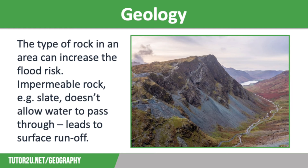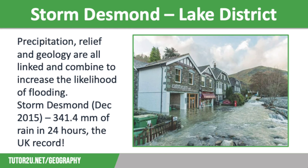In contrast, low-lying areas are often covered in impermeable clays. While there is vegetation to intercept rainfall, infiltration doesn't really occur as clay soils are very compacted, so water cannot get through. Areas with permeable rocks such as limestone and chalk have a much lower risk of flooding, as water can pass through these rocks, which decreases surface runoff. Precipitation, relief, and geology are all linked and combined to increase the likelihood of flooding. For example, the Lake District in northwest England has one of the highest rainfall totals in the UK, with steep slopes mainly made from impermeable slate, so flood events are regular there.